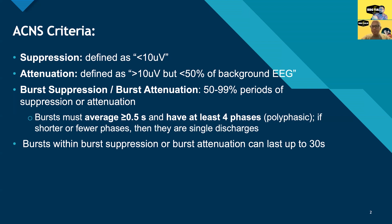The only other case is when there's no burst, just suppression — we call it diffuse suppression, or very low voltage. If suppressions are intermittent, there has to be something in between — we call those bursts, and they have to be at least half a second long and have some phases. If there are fewer than four phases, we just call them discharges.